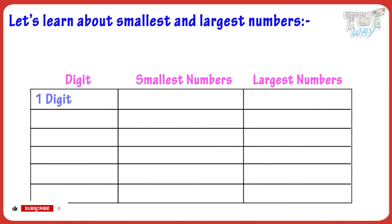1 is the smallest one-digit number. 9 is the largest one-digit number. 10 is the smallest two-digit number. 99 is the largest two-digit number. 100 is the smallest three-digit number.